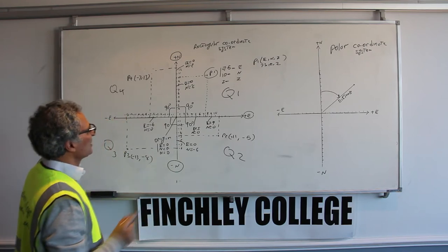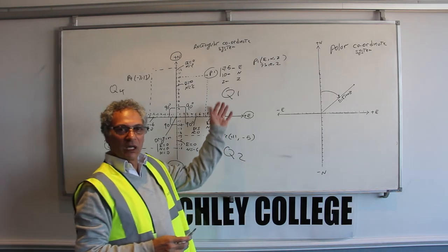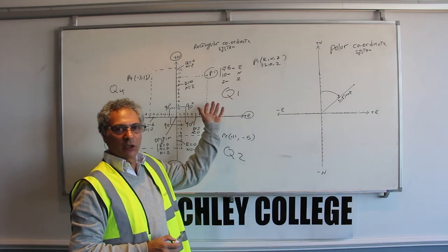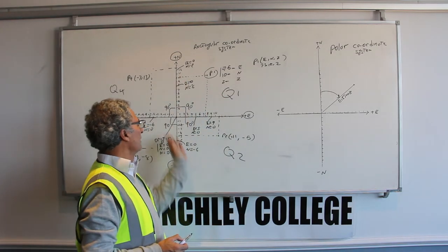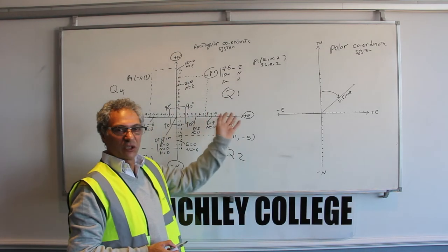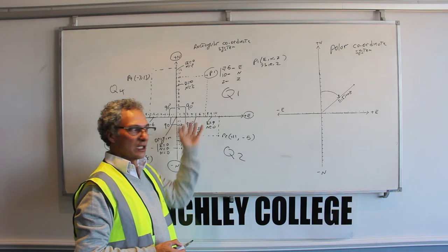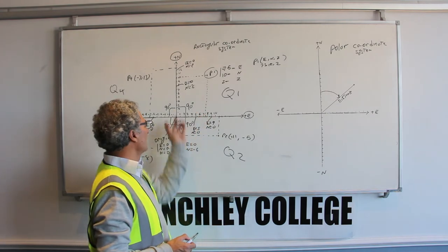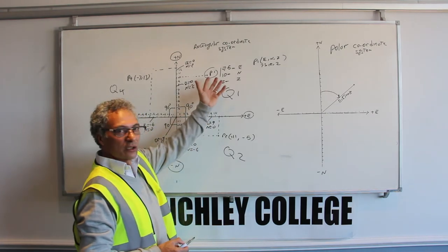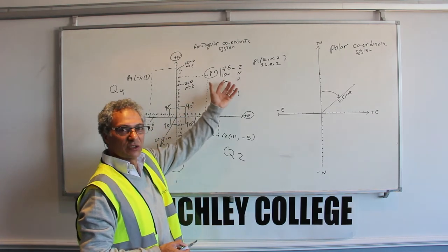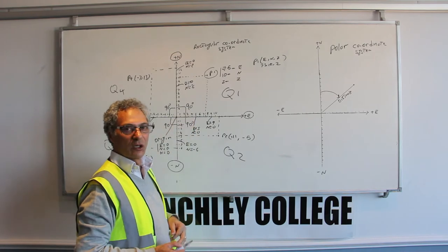So this is a simple way to identify where you are on site. You will always have an imaginary or real-life intersection line axis and you will work out your position in relation to this origin.